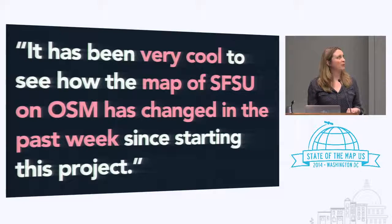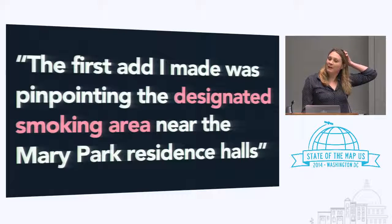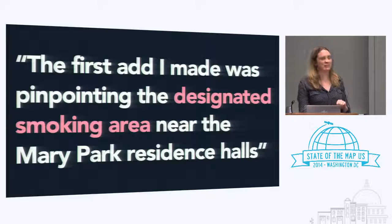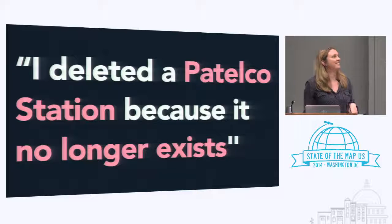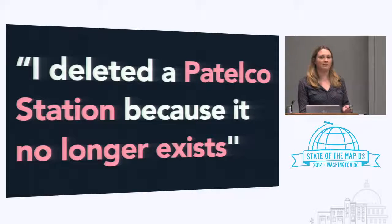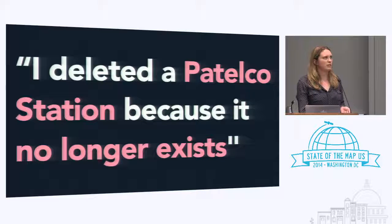As many regular OSM contributors do, our students sometimes chose to add features that were particularly important to them — and then told us about it. There was a big discussion about how a smoking area should be tagged. The notion that students would have local knowledge valuable to the map did pan out. For instance, there was an ATM station previously on the map that we were able to delete, along with a number of random geonames tags for buildings that had been demolished.